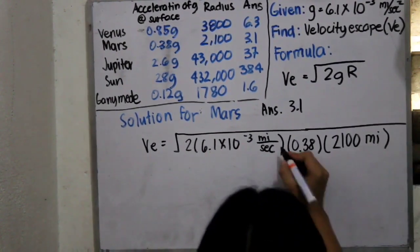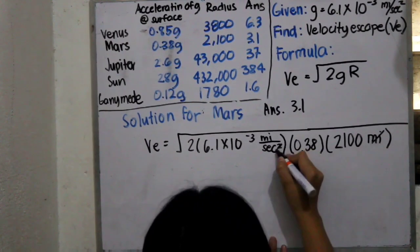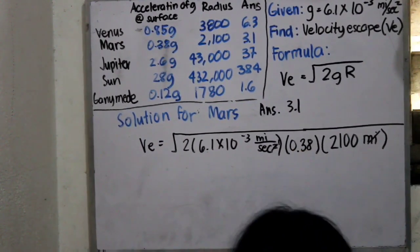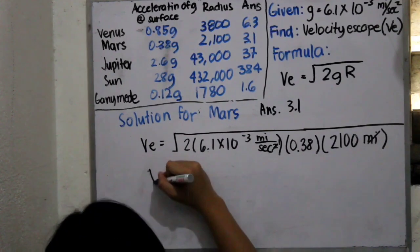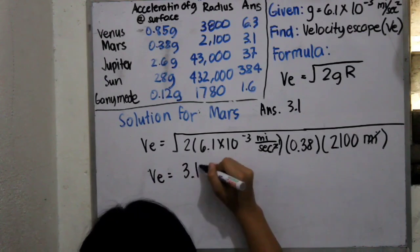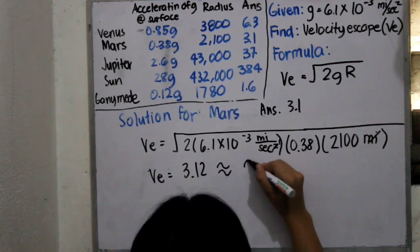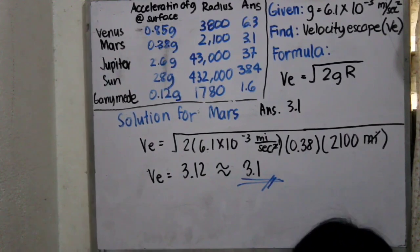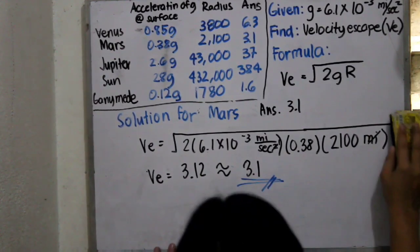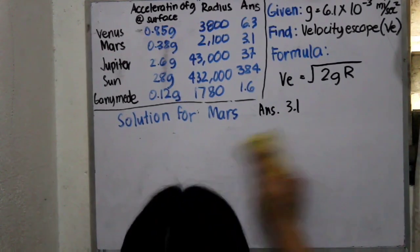So, same as before, miles will be canceled, and we will be left with 1 mile and 1 second. So, VE, using the calculator, we can obtain the 3.1. VE is equals to 3.12. Rounded off, we have the approximation of 3.1 miles per second. Don't forget to put the miles per second.